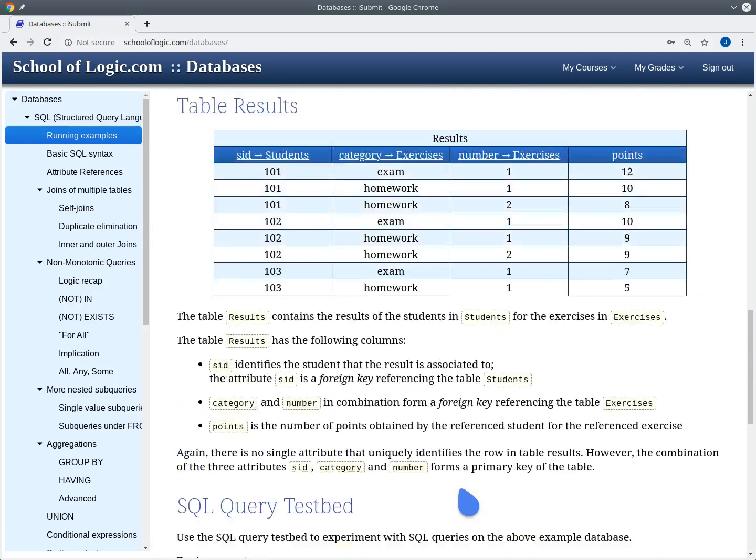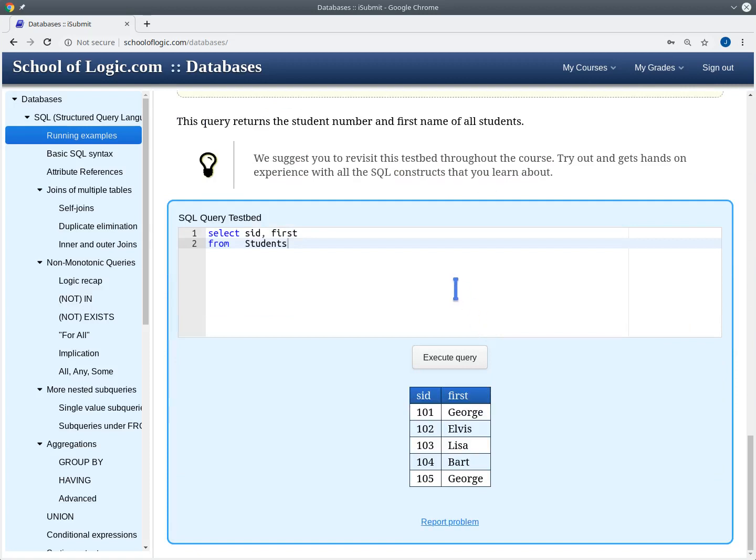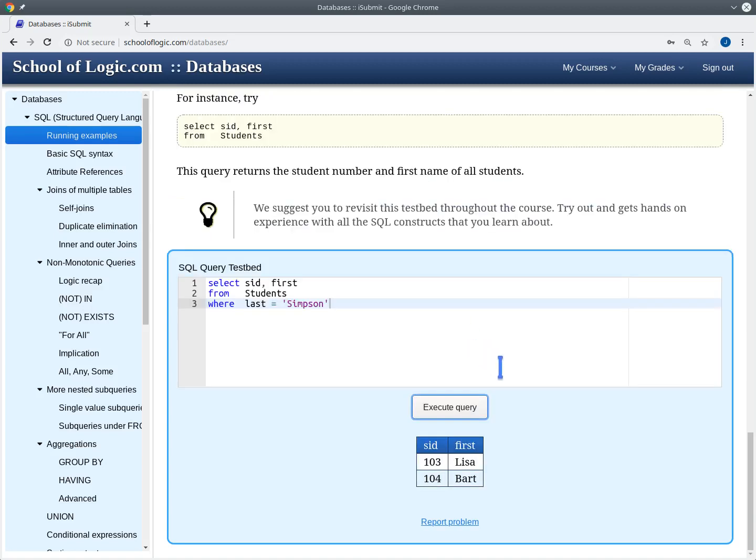Now let's have a look what we could add as a WHERE clause. We could for example add a WHERE clause that says that we want to have only those first names and student IDs of students that are called last name Simpson. Let's execute the query again. And now we get as a result a table that contains a student ID and the first name of all the students whose last name is Simpson.